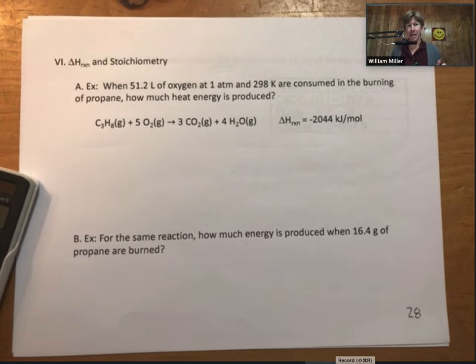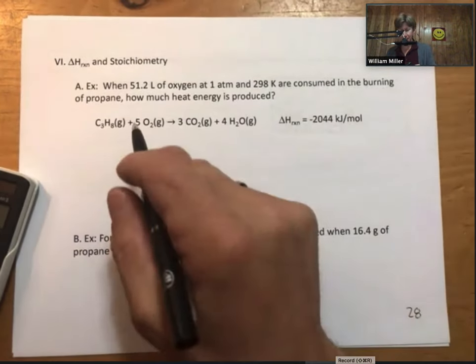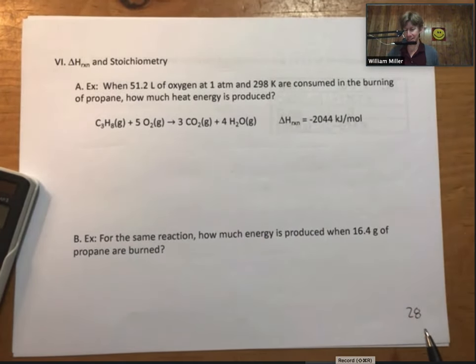By far the most useful thing from delta H reactions, once we know what a delta H reaction is, is using it to estimate the amount of energy, the heat energy that comes out of a reaction or goes into it using stoichiometry. This is Roman numeral 6. We'll go straight to examples.